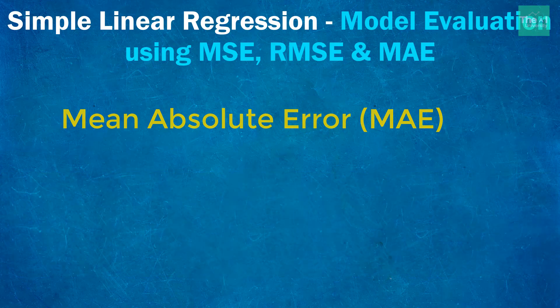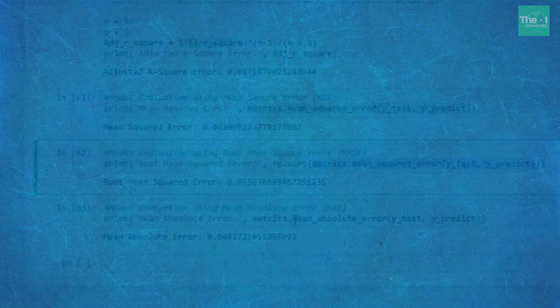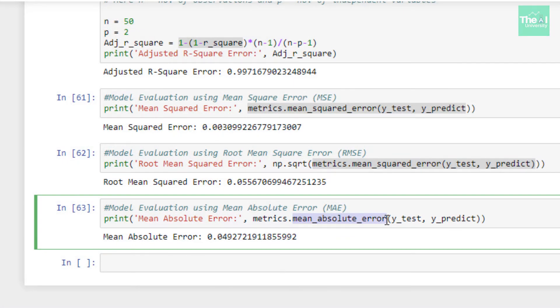Finally, we can calculate MAE using the function called mean_absolute_error from metrics package as shown here on the screen. Again, I'm passing y_test and y_predict as a parameter to this particular function. So when I ran the cell, I got the value as 0.049, which is quite low depicting that our model is really good. Please note that RMSE and R square are very similar to MSE from optimization point of view.